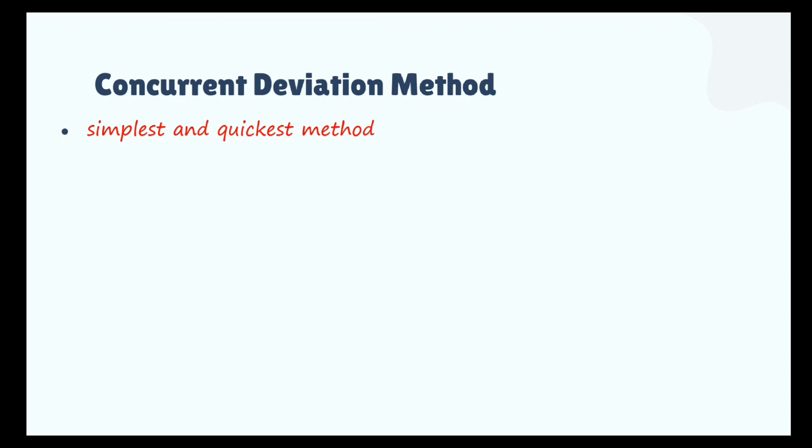Since it is the quickest, we can calculate the value, but we cannot rely on that value completely. To get the speed, we must have ignored many things. So in concurrent deviation, we cannot take the magnitude — the value — very seriously. If we cannot take the value seriously, why calculate this? Even if we cannot take the value seriously, based on the sign, at least we can decide whether it is positively or negatively correlated.